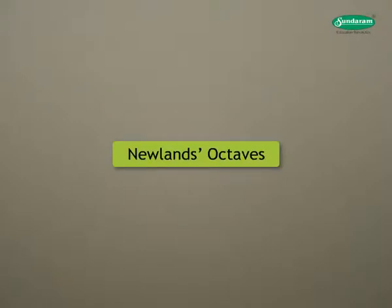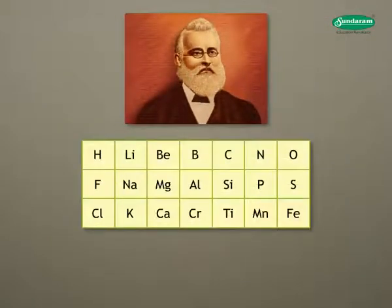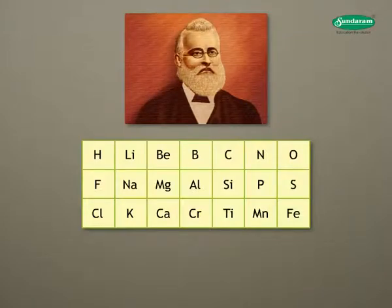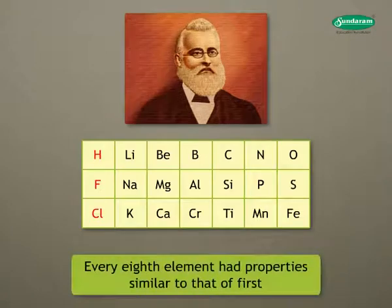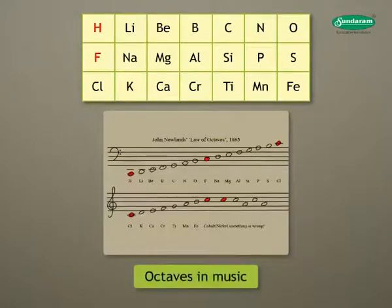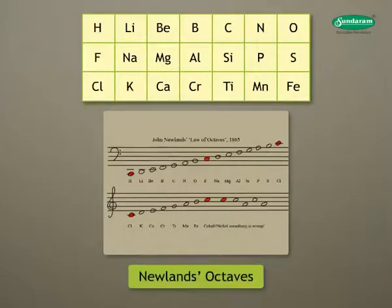Now let us study about Newlands octaves. An English chemist, Newlands, attempted to classify elements. By this time, 56 elements were discovered. Newlands arranged all these elements in increasing order of their atomic masses. He found that every eighth element had properties similar to that of the first. For example, properties of hydrogen are similar to fluorine. He compared this to the octaves found in music. Therefore, his classification was known as Newlands octaves.